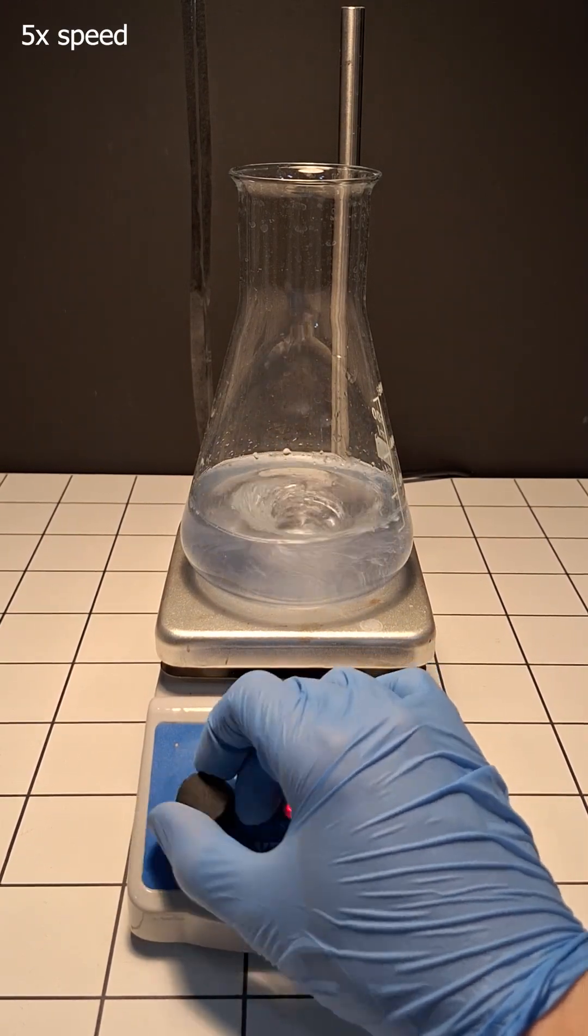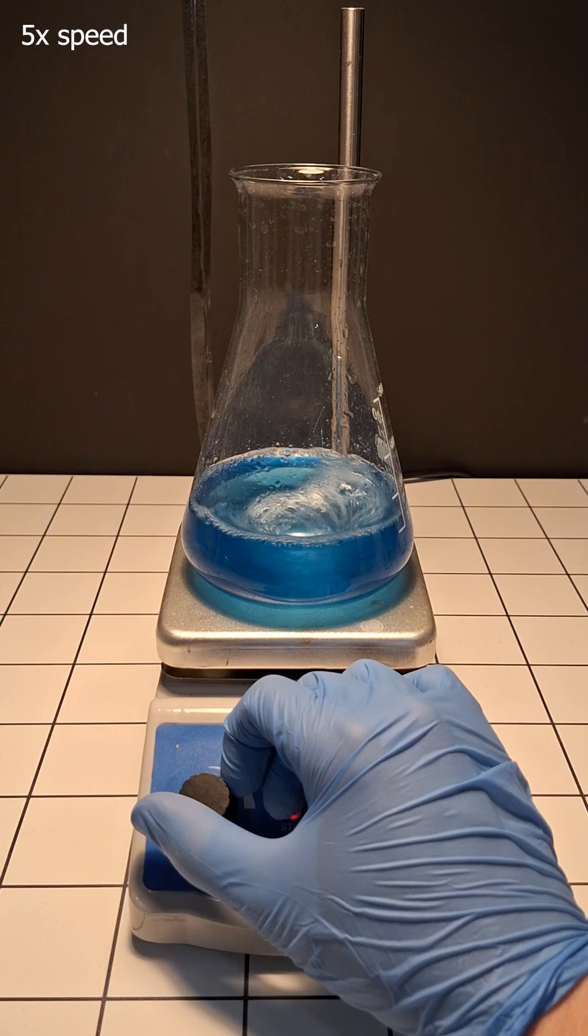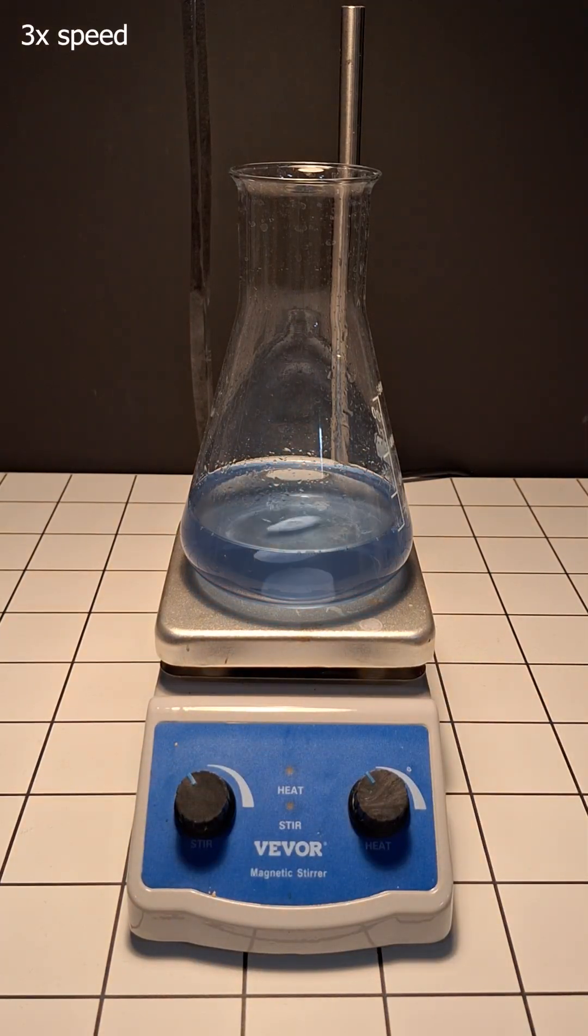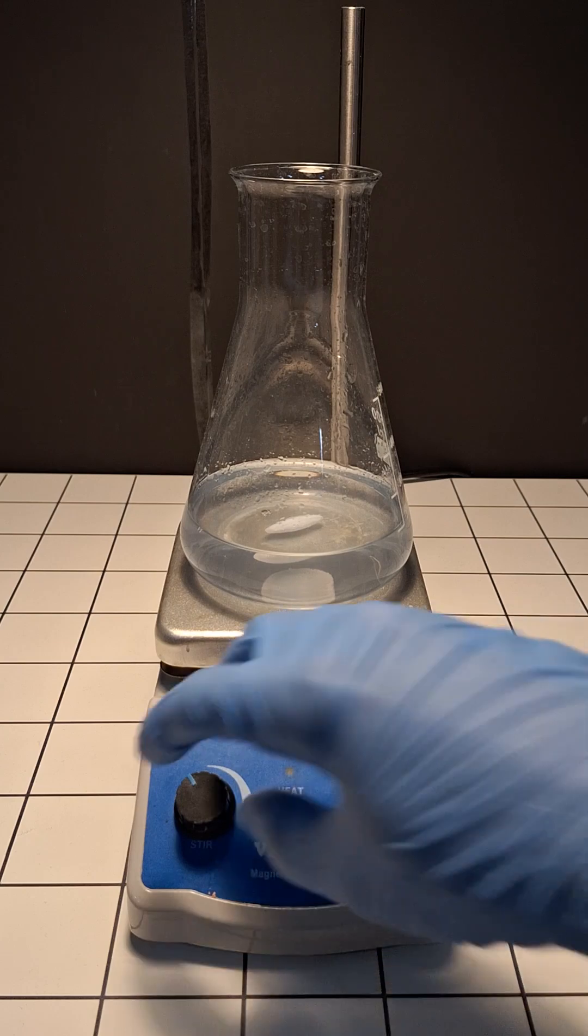Now, if we turn the stirring back on, we can see that it becomes blue again. When we then turn it off, it again loses all of its color.